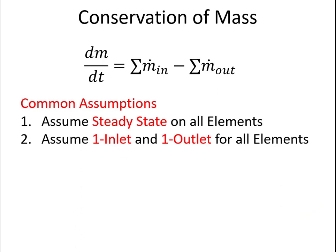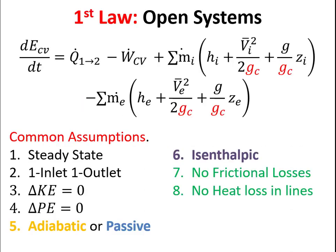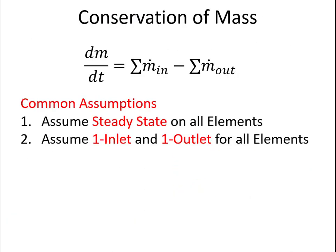Conservation of mass in this cycle is fairly simple. We're not splitting the mass like we did in Rankine Regeneration. So if the system is at steady state, and all components have one inlet and one outlet, there ends up only being one mass flow rate in the entire system.